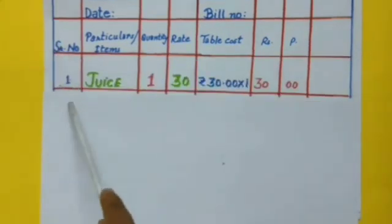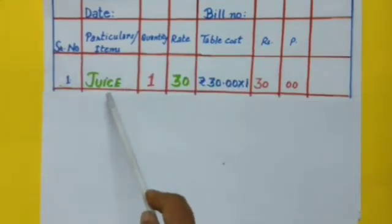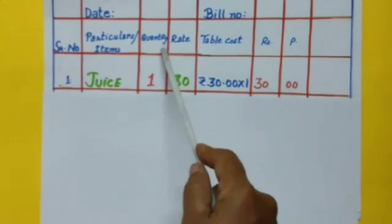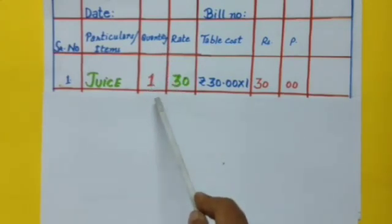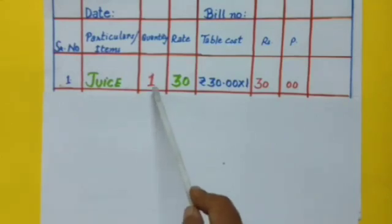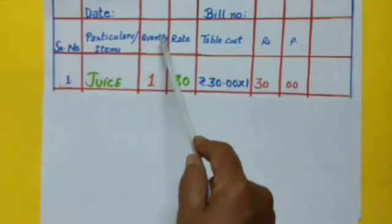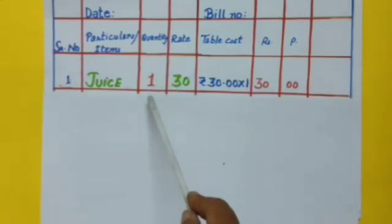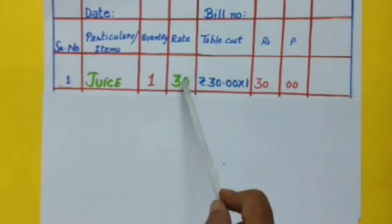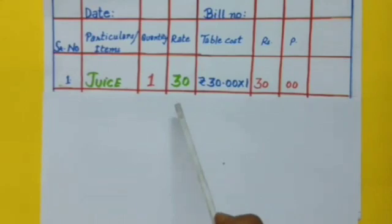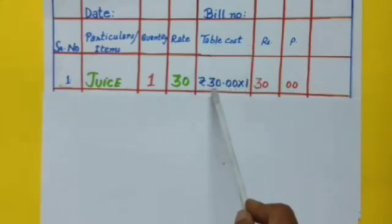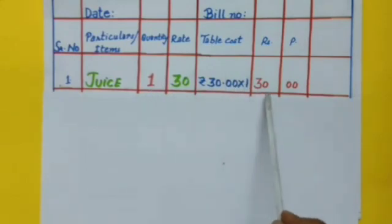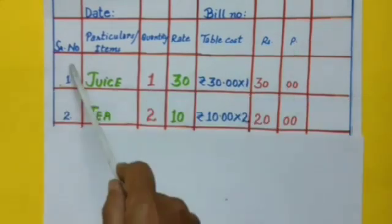Serial number 1, name of the item: juice. Under the quantity column, how many glasses of juice were ordered? Yes, one glass of juice was ordered. So under the quantity column we will write 1, rate of one glass of juice is 30 rupees. Total cost: 30 into 1 is equal to 30 rupees.